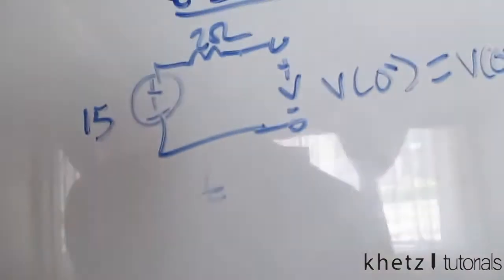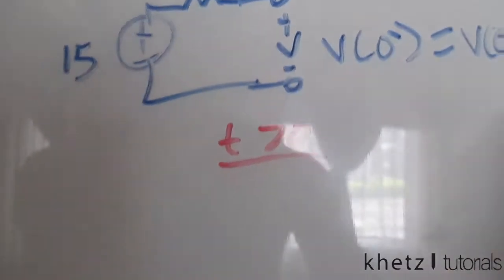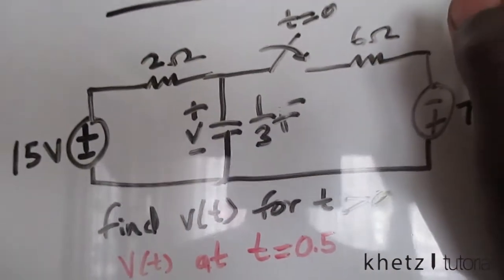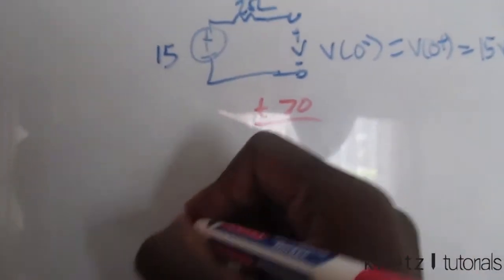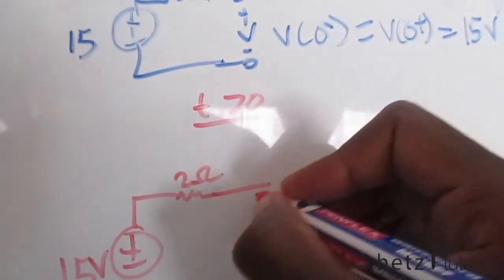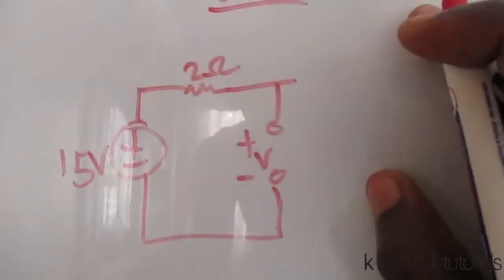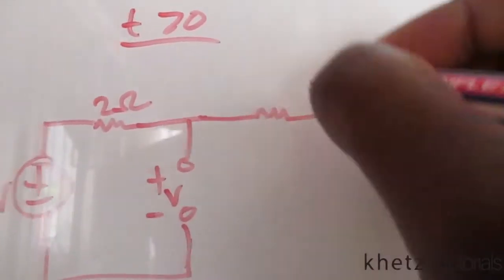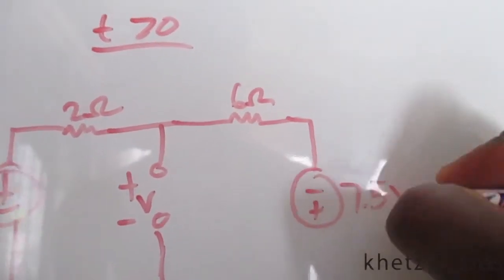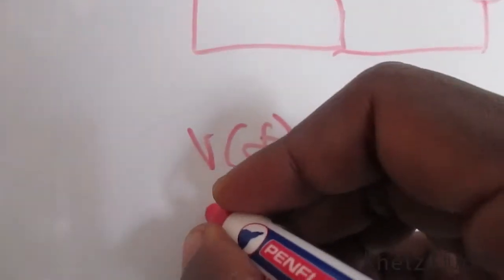For time greater than zero we close the switch, and the right part of the circuit is no longer active. The new circuit consists of the 15-volt source, the 2-ohm resistor, an open circuit for the capacitor, a 6-ohm resistor, and a voltage source. This circuit will help us find v(∞) as well as the time constant.